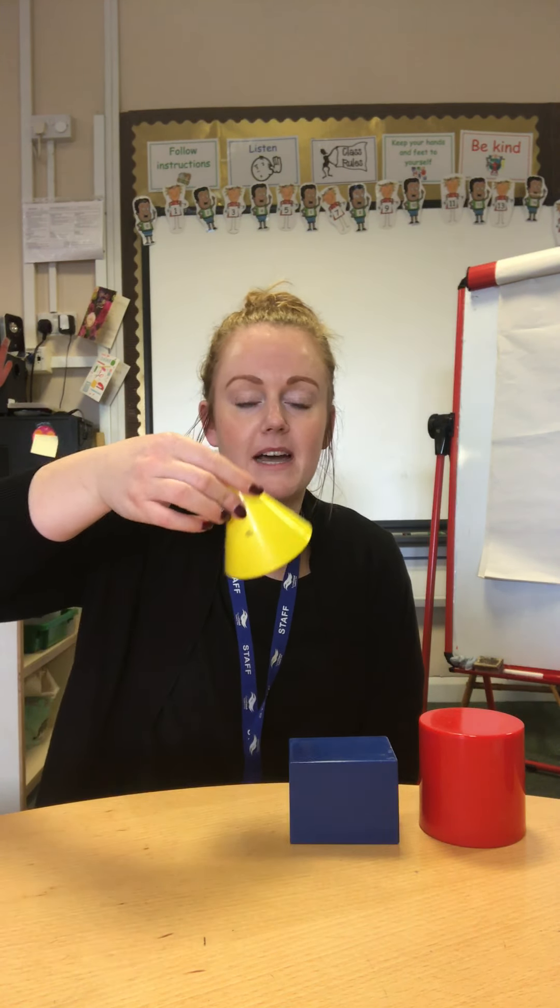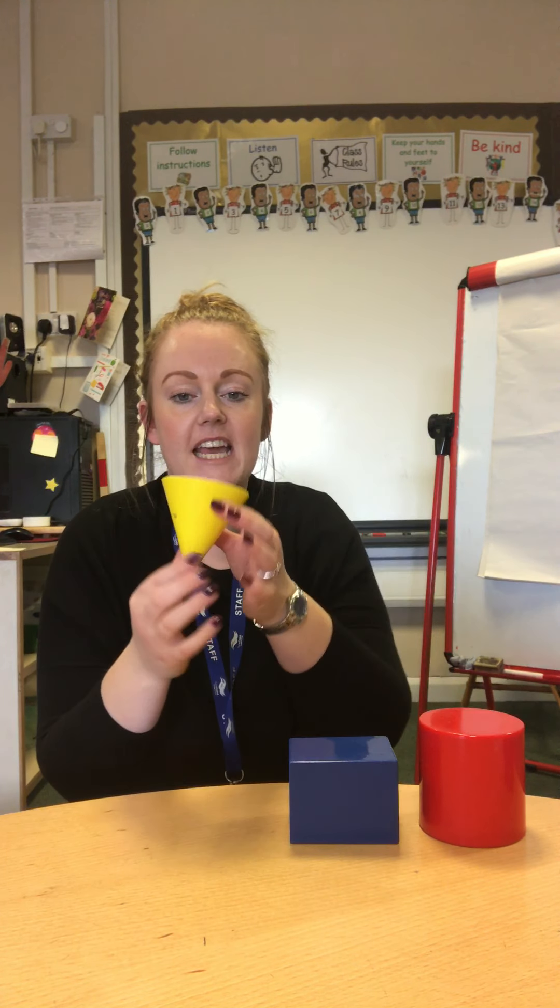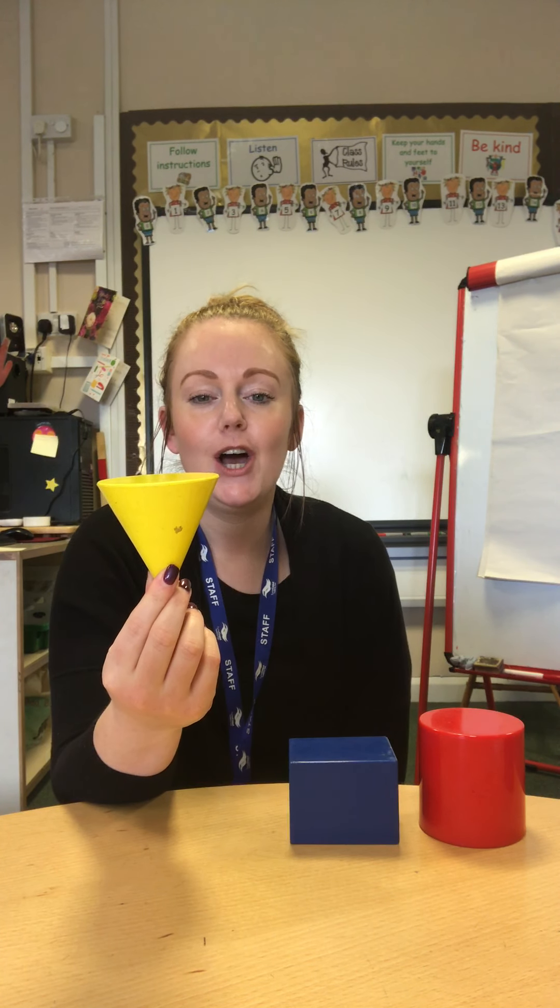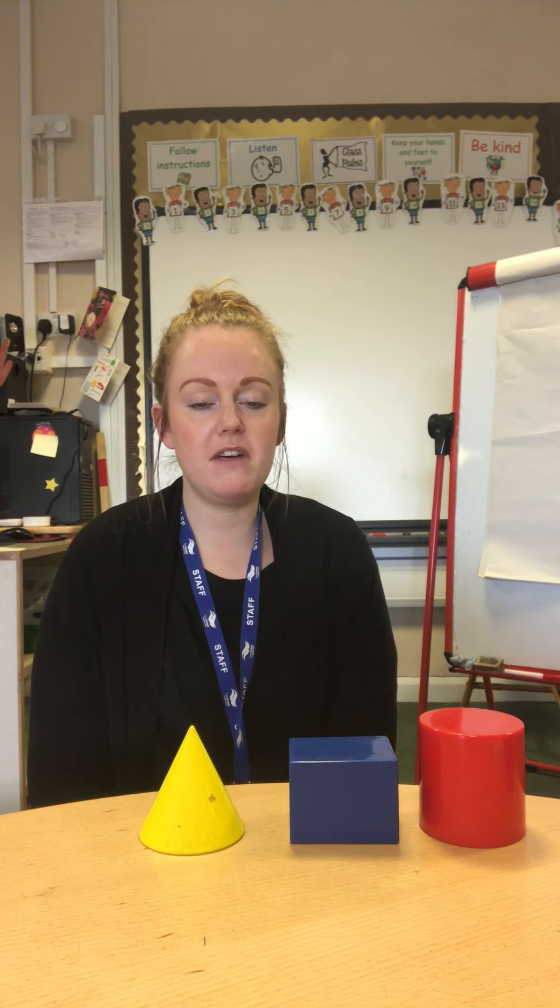Can you remember what this shape is called? Sometimes we might see it this way up, then sometimes we might see it this way up. I'll give you a little clue — what you might eat your ice cream out of. A cone! That's right, this is a cone. So we've got three shapes now: cylinder, cuboid, cone.